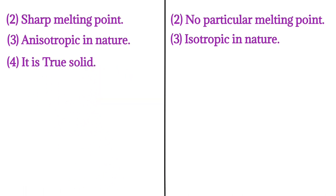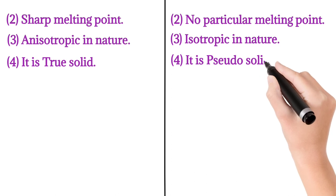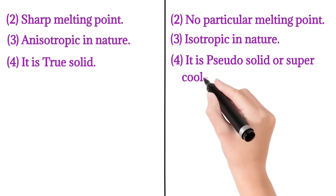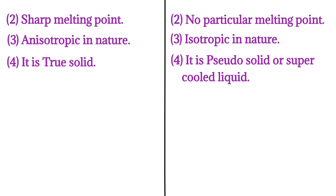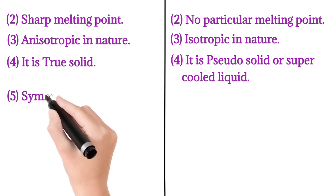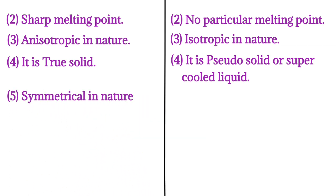In the case of crystalline solid, they are true solids, meaning they are rigid in nature. But in the case of amorphous solid, they are pseudo solids or supercooled liquids, which means they have a tendency to flow very slowly.